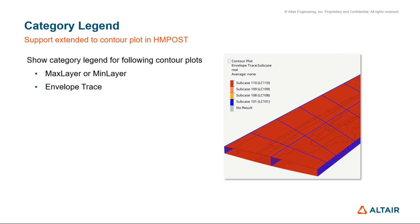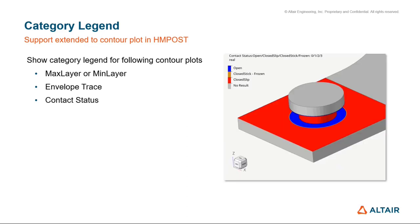Also for the envelope trace, this ties into the derived load cases discussion — we have the envelope trace for the sub-case and can see the contour not just with the ID of the sub-cases, but with the label from their definition. Last but not least, we have contact status — the ability to showcase open, frozen, or closed contact, just as HyperView was doing.